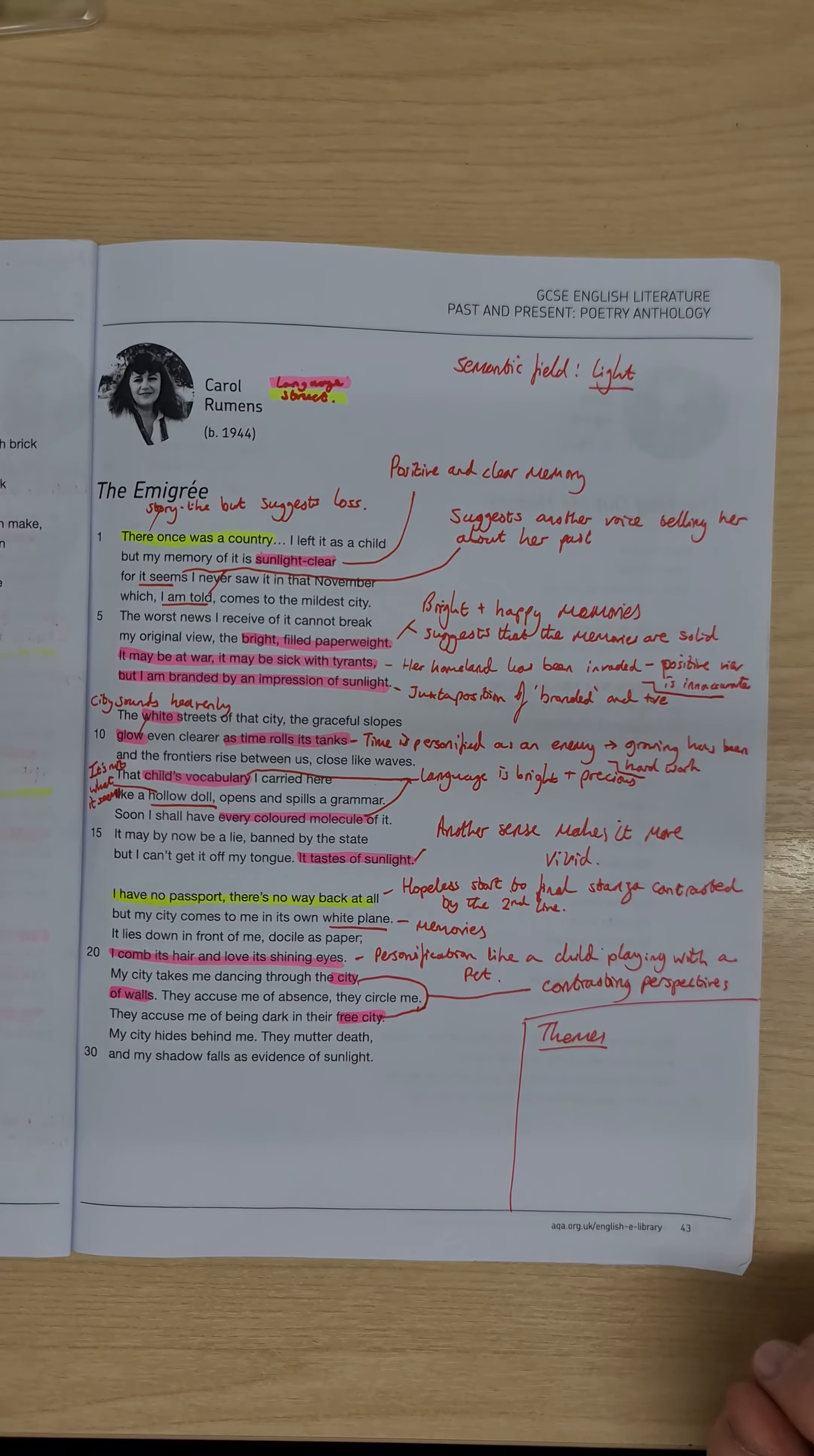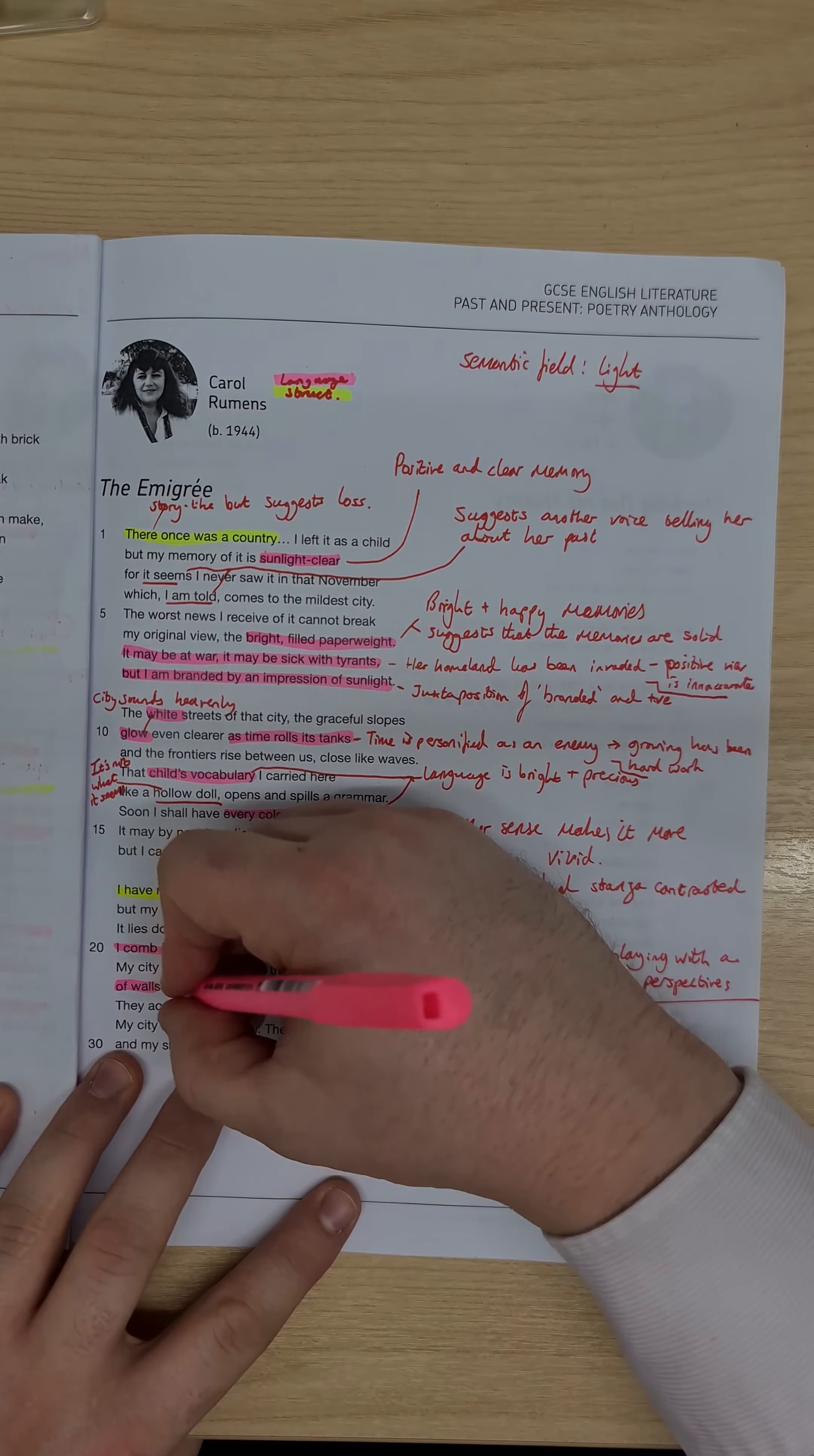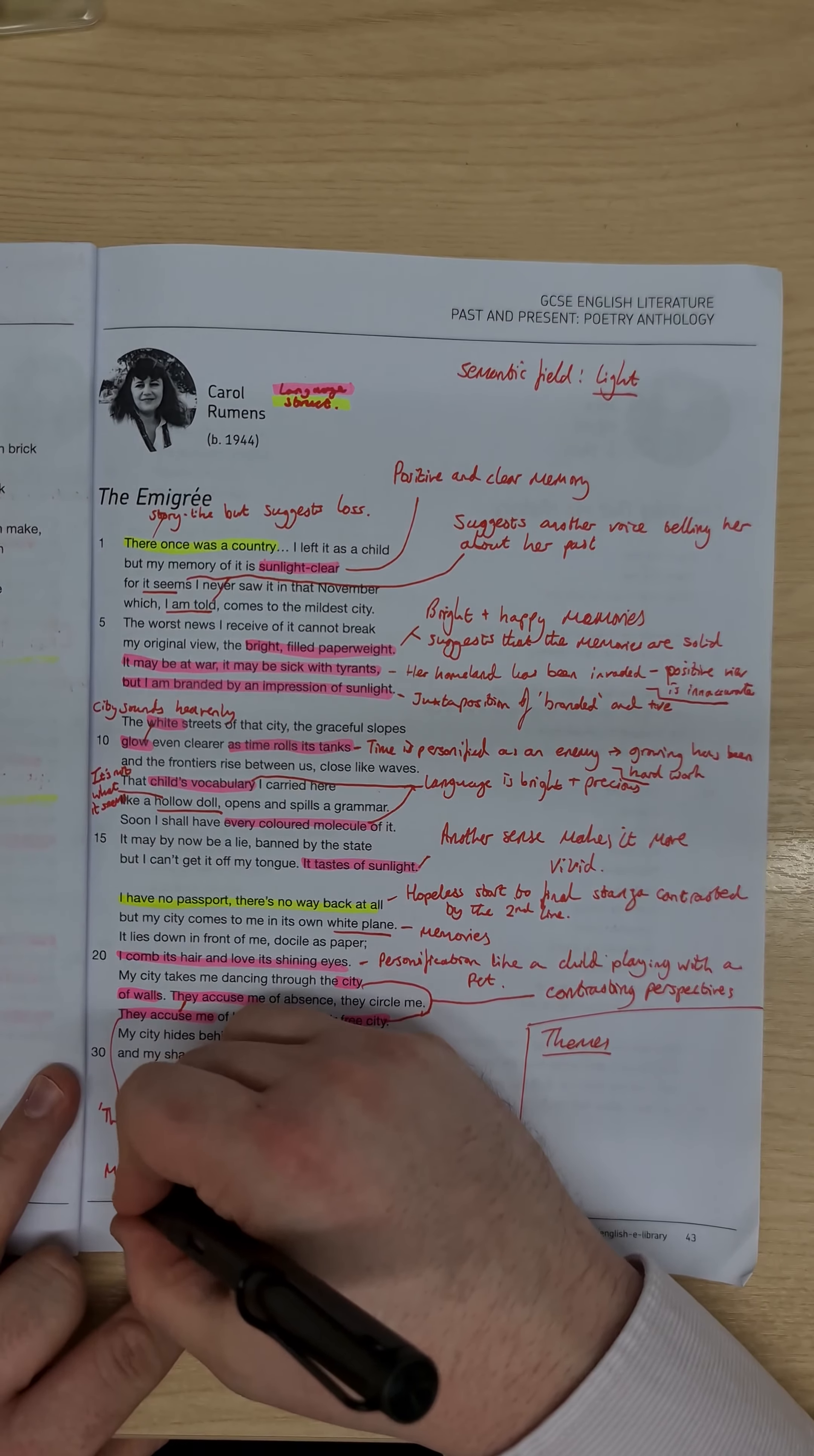they accuse me of absence, they circle me, they accuse me of being dark in their free city, they utter death, and my shadow falls as evidence of sunlight, so we have some really dark ideas here, but it's very menacing, and we have again this language of conflict, with they accuse me, and they accuse me, of being dark in their free city, this repetition of they accuse, who they are, is unclear, but it's still menacing, in its tone,